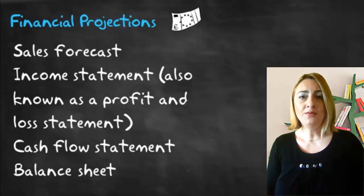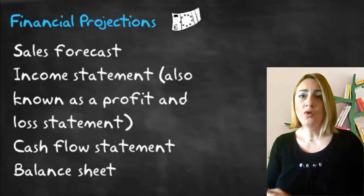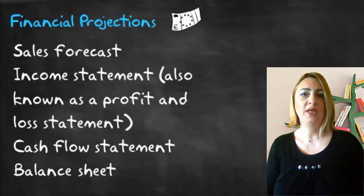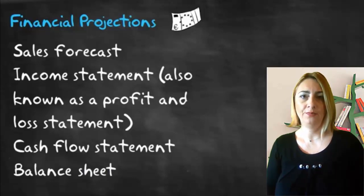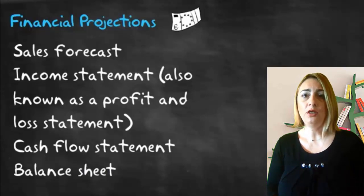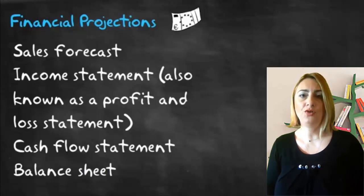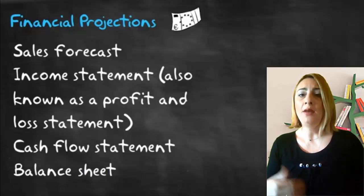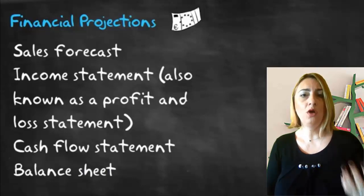Financial projections also include the income statement — also known as a profit and loss statement — which records the venture's gross revenues per month and subtracts all monthly expenses, both variable and fixed. The cash flow statement tracks the movement of cash into and out of the venture. And the balance sheet provides a snapshot of how the venture is using money through operations and money that has been invested or loaned.